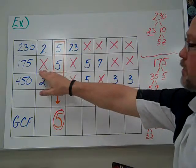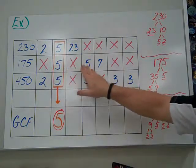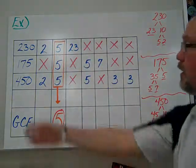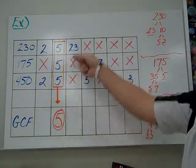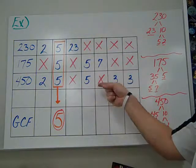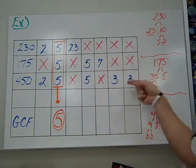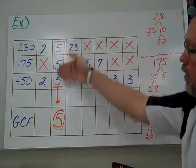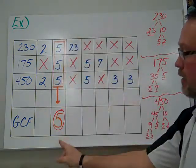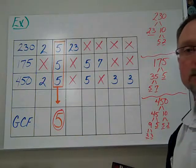175, we do not have a 2, but we do have a 5. We have another 5 and another 7. 450, we have a 2, we have a 5. We don't have a 23, but we have another 5. We don't have a 7. We have a 3, and we have a 3. So what we have is one filled column of all 5s. That value comes down, and that is now our greatest common factor.